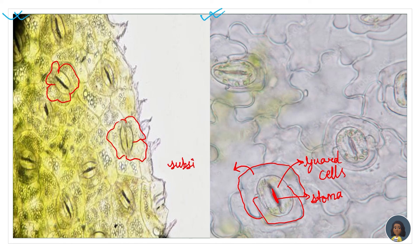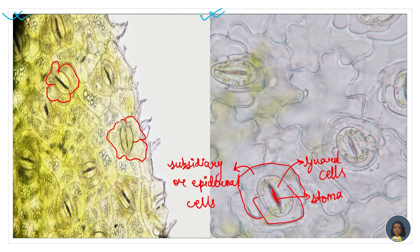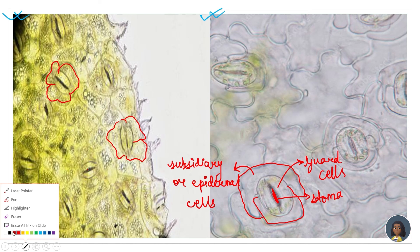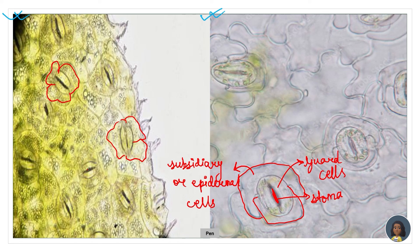The epidermal cells are also known as subsidiary cells — both names are equally important, so do not forget either. In these microscope images, the dark structures indicate open stomata — that is, the pores are open.